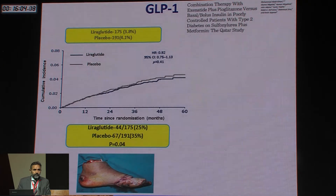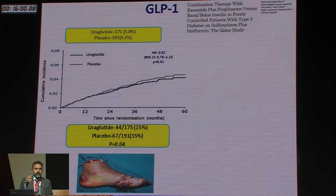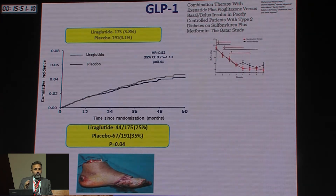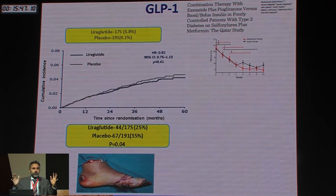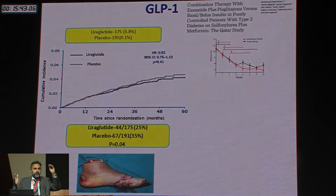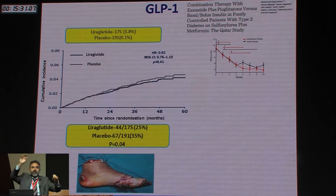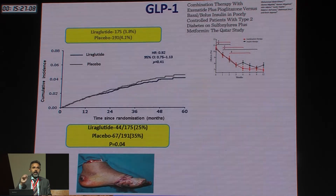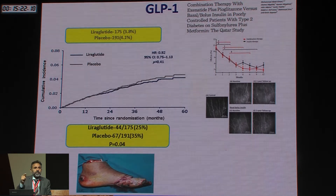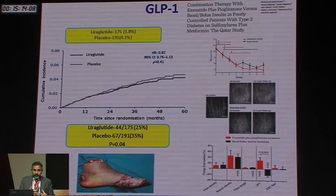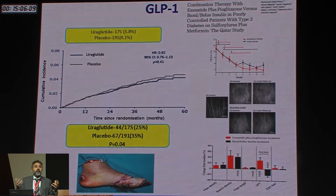We did a study in Qatar looking at the effects of exenatide once weekly versus insulin in diabetic patients with neuropathy. Patients had poor glycemic control — HbA1c of 10.5% — on metformin or sulfonylurea. They were randomized to GLP-1 therapy or basal bolus insulin, bringing HbA1c down by about 3%. We saw regeneration of nerve fibers, assessed in the cornea — showing for the first time that GLP-1 therapy or even insulin caused regeneration and repair of nerve fibers.